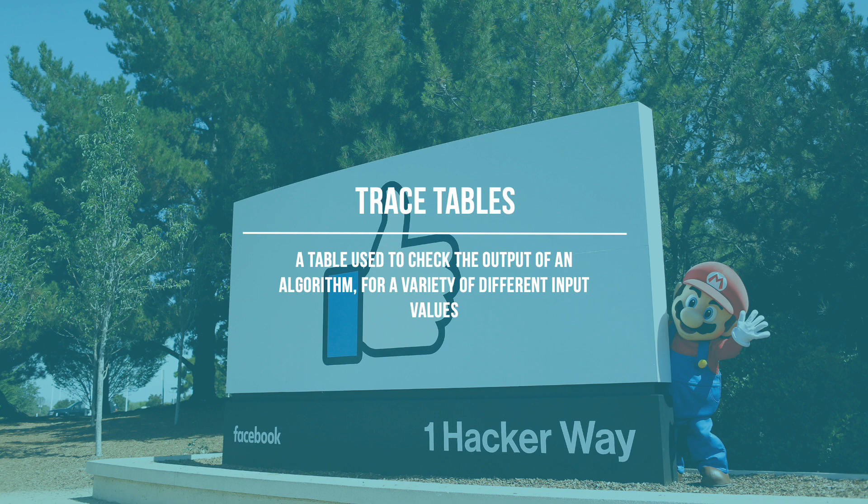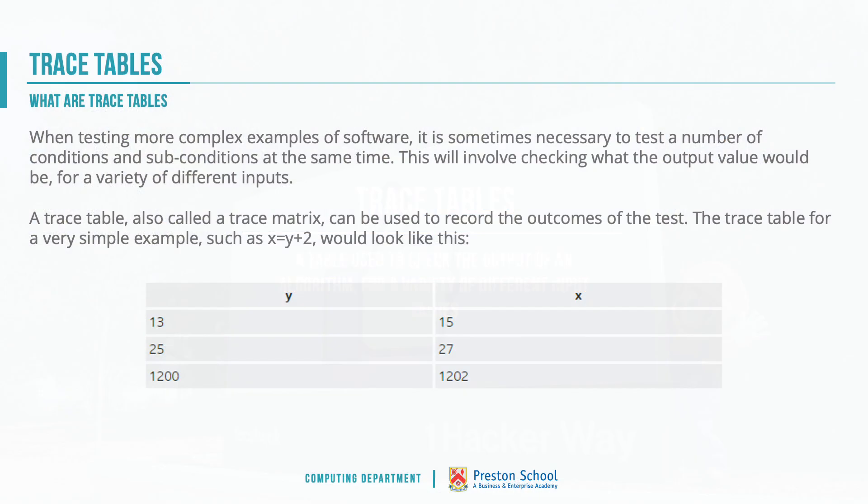A trace table is used to check the output and status of an algorithm for a variety of different input values at a variety of different points in time. When we test a complex algorithm, it's sometimes necessary to check our program with a number of different inputs. If we're creating a program to work out whether the numbers are even or not, just checking the number six probably isn't good enough in terms of our testing. We're going to want to check with a range of different numbers: high numbers, low numbers, even numbers and odd numbers.